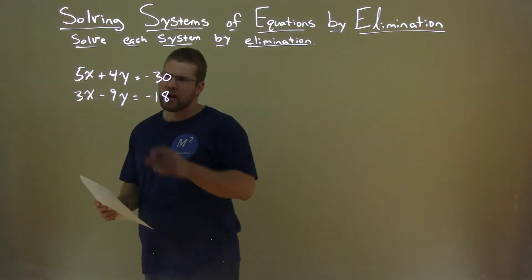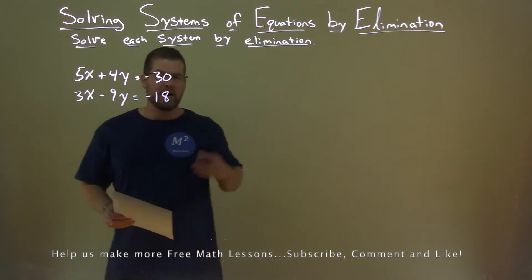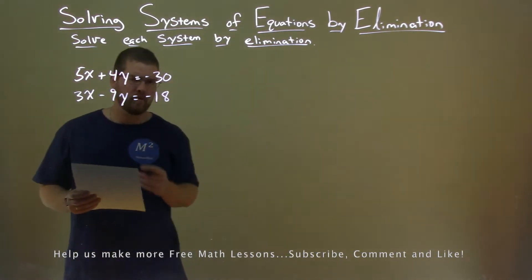We're given this problem. 5x plus 4y equals negative 30. 3x minus 9y equals negative 18. We've got to solve this.